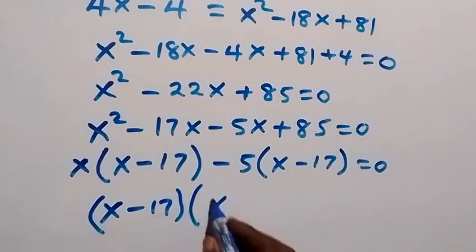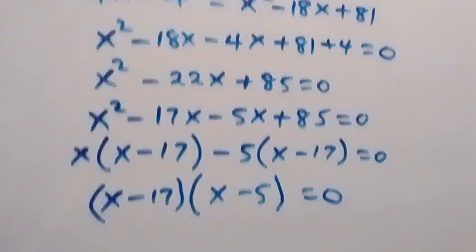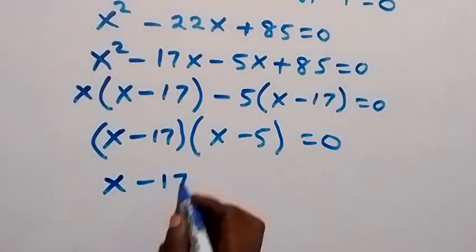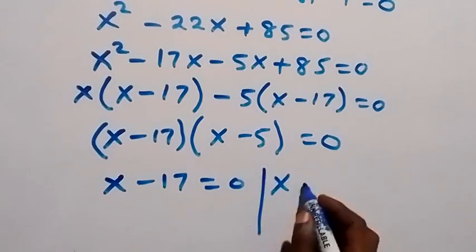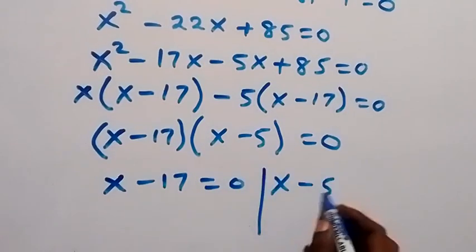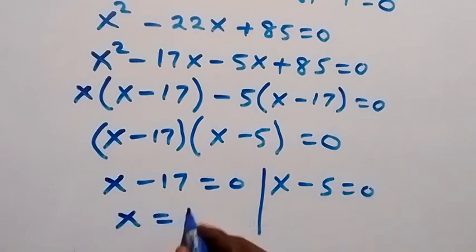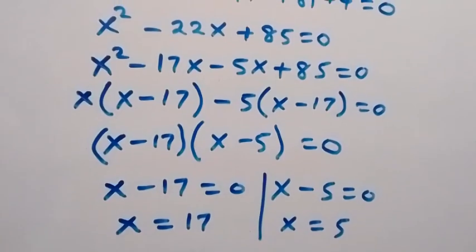Taking out the common factor (x minus 17), we get (x minus 17)(x minus 5) equals 0. The two cases are x minus 17 equals 0 or x minus 5 equals 0, giving x equals 17 or x equals 5. These are the two possible values of x.